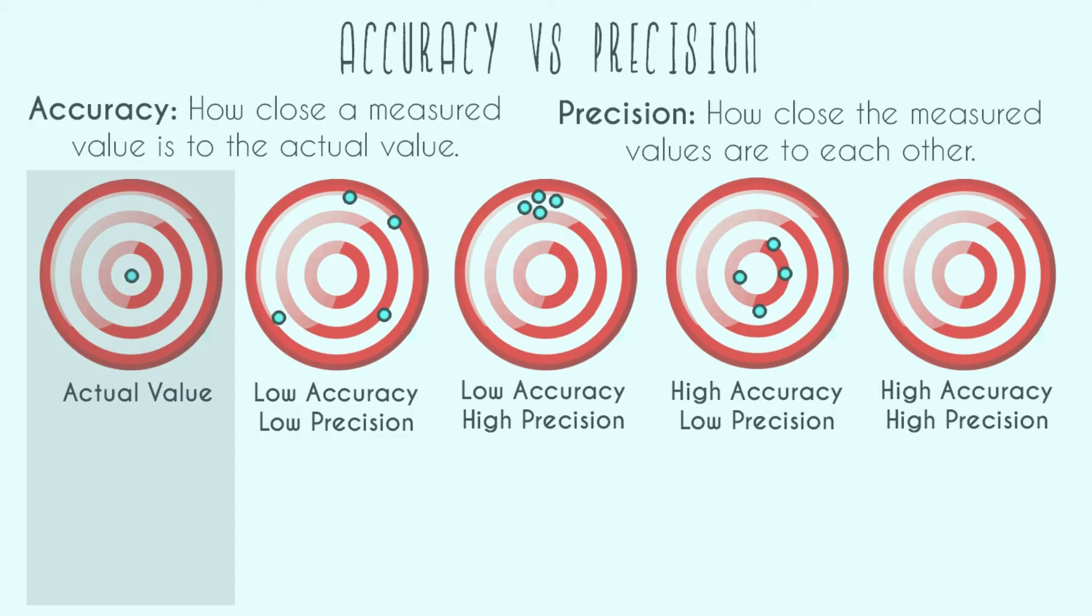And now let's see the best case scenario of all these throws, which is high accuracy and high precision. So we're going to get in the middle of the dartboard and they're also going to be really close to each other. So that'd be like this. Very accurate, very precise.